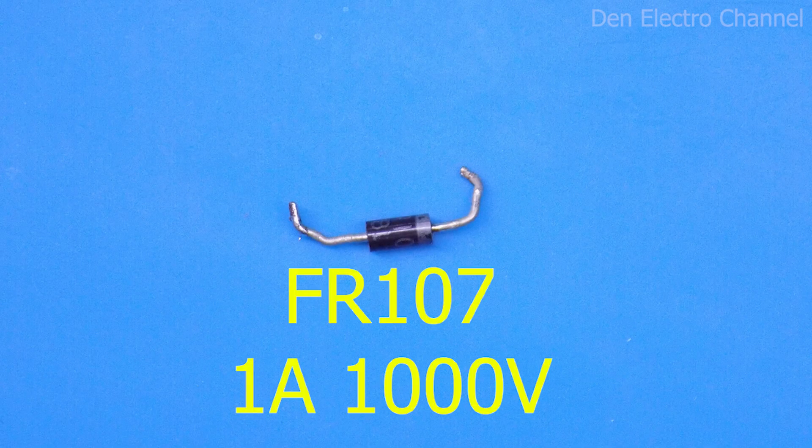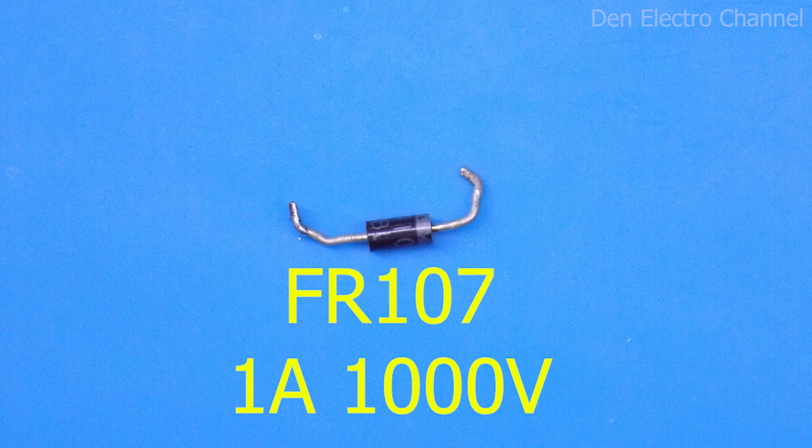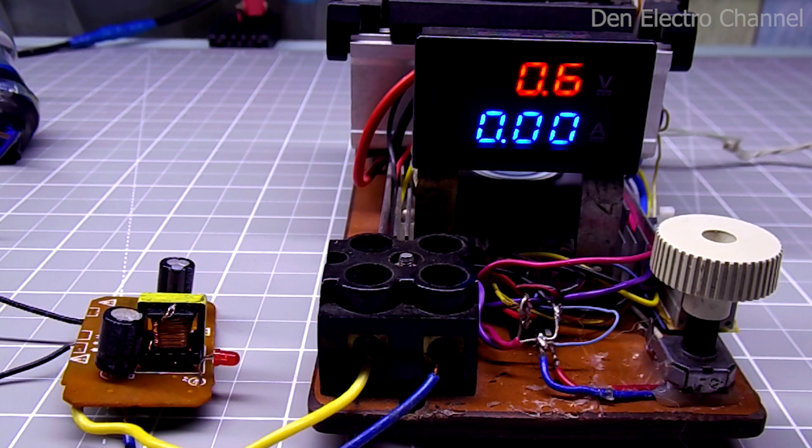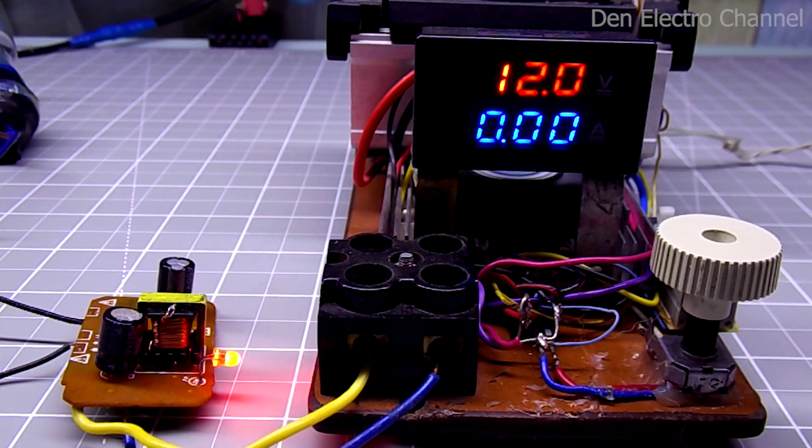I installed a pulse FR 107. It can handle 1 ampere 1000 volts. After installing it, everything began to look like this. I'll connect the power supply to the electronic load again and see what happens this time.